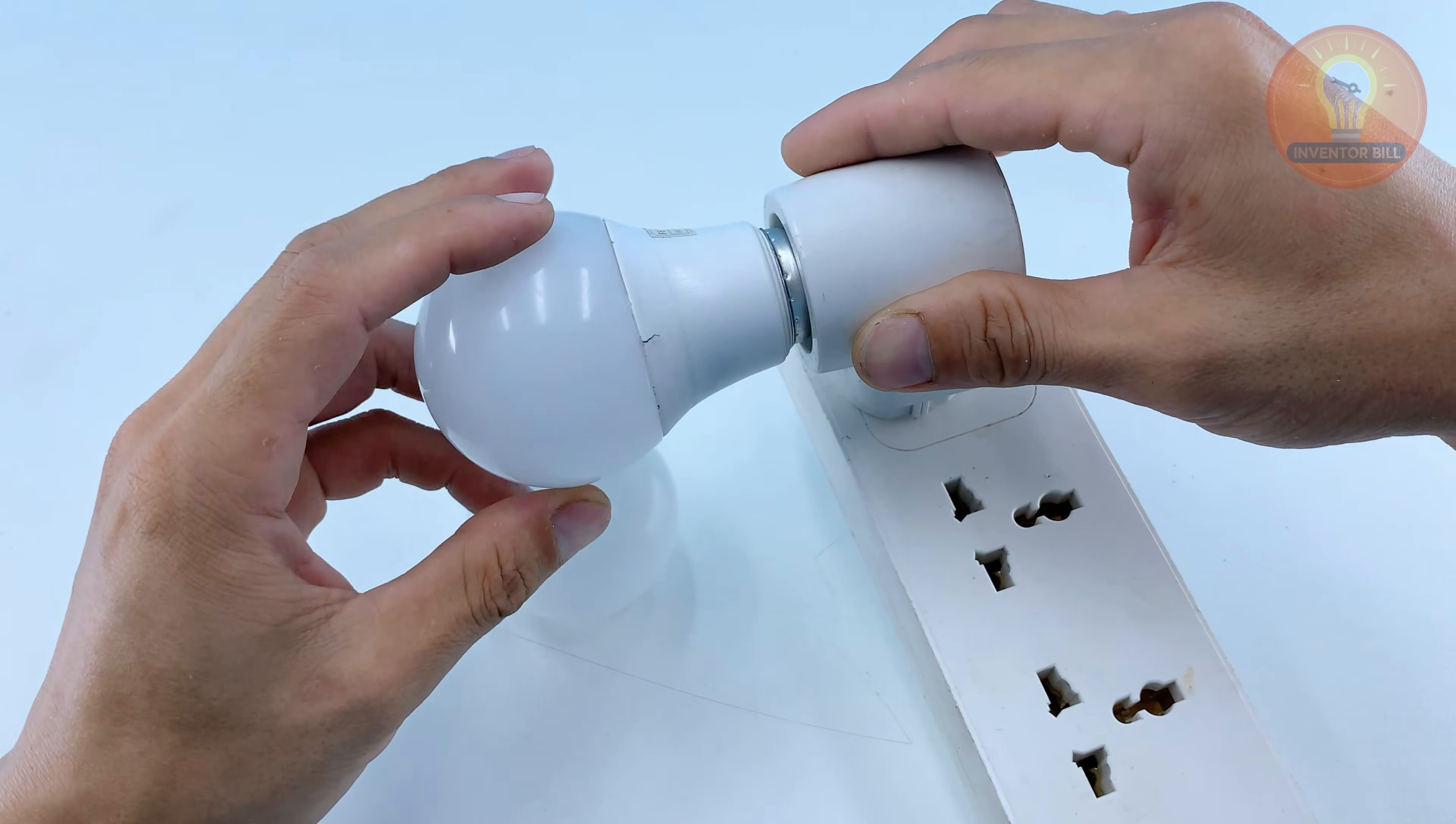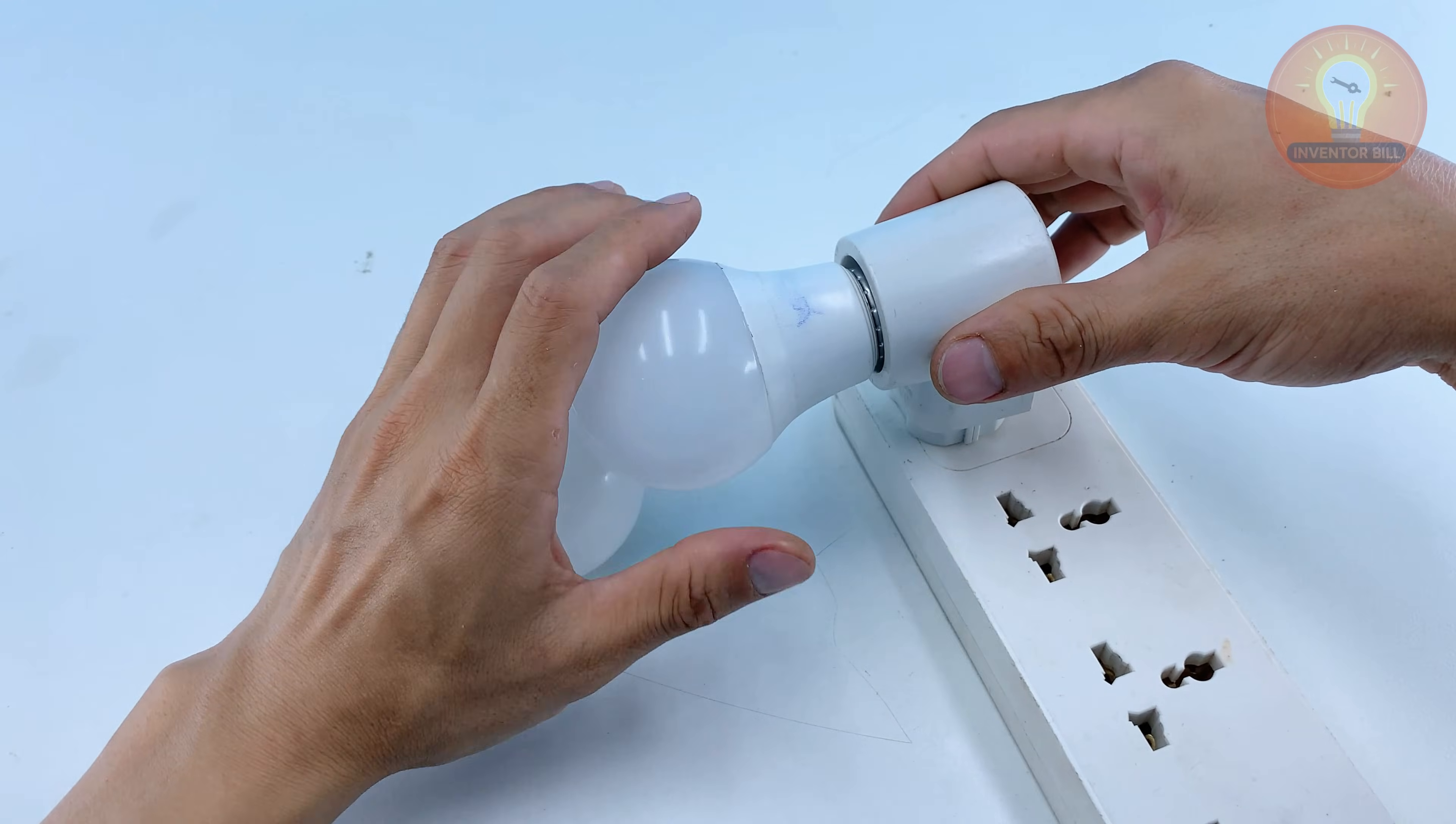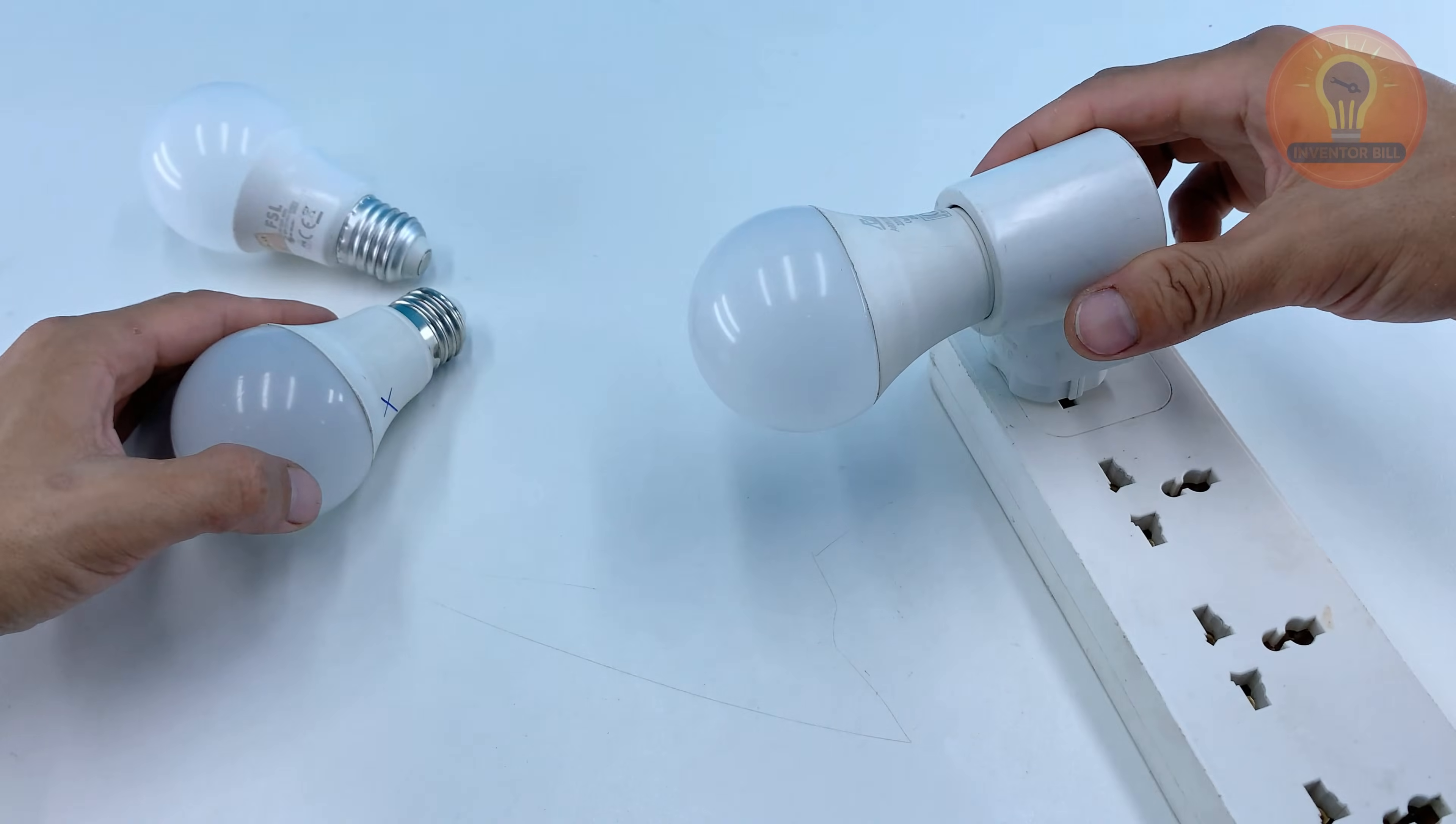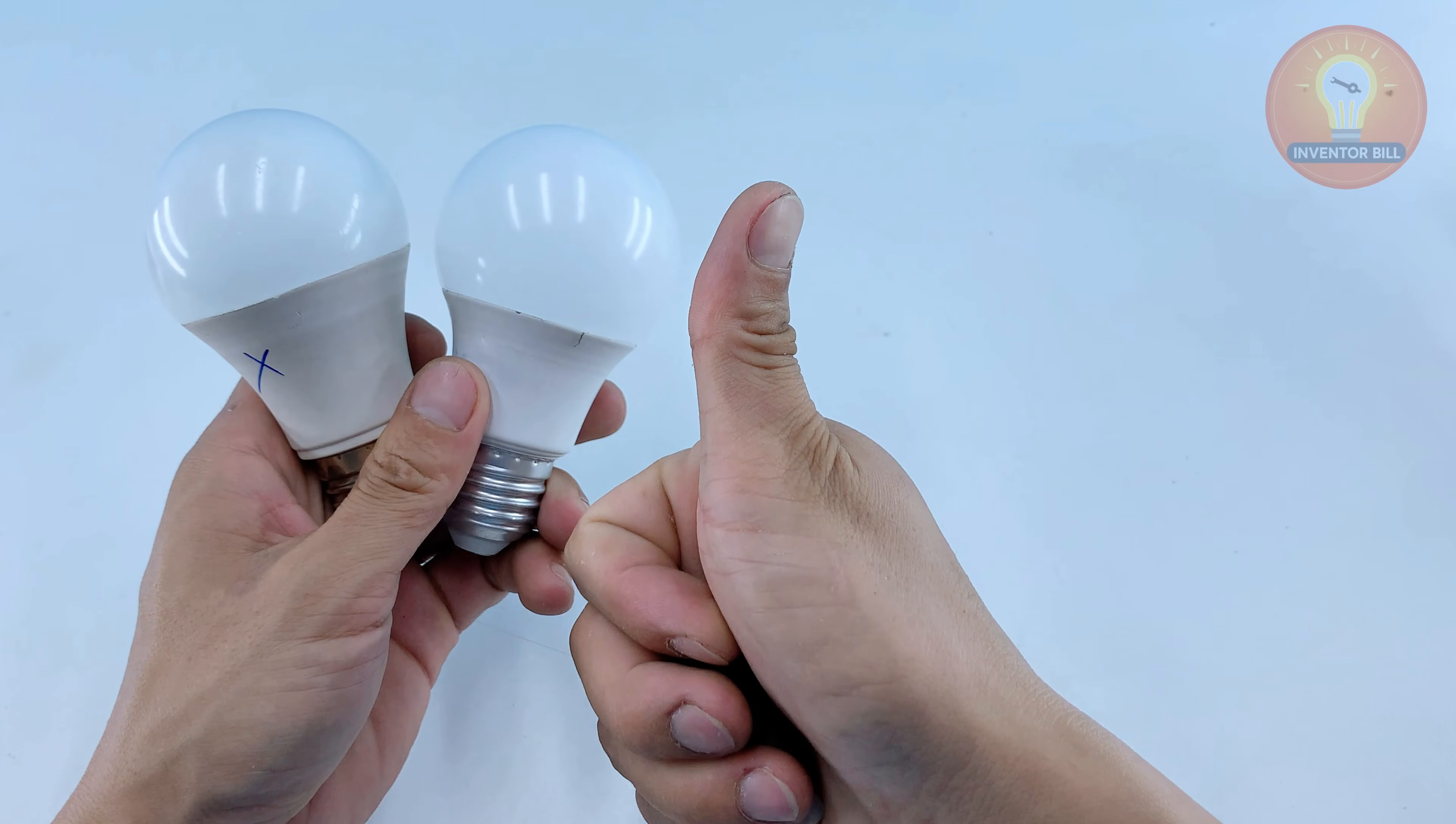When you look at both bulbs shining again, it feels good knowing you brought them back with a few simple steps and tools you already have at home. Fixing these LED bulbs is not difficult once you learn how to check each chip, make a clean contact and use a small solder repair when needed. If you enjoy practical projects like this and want more ideas that save money and keep your tools working longer, make sure you subscribe and follow. Your next repair might be even easier than you think.